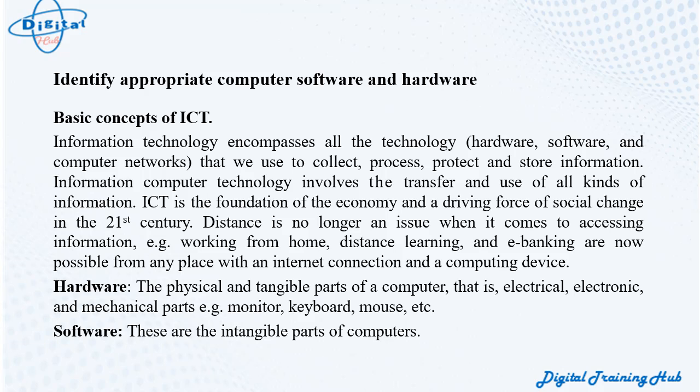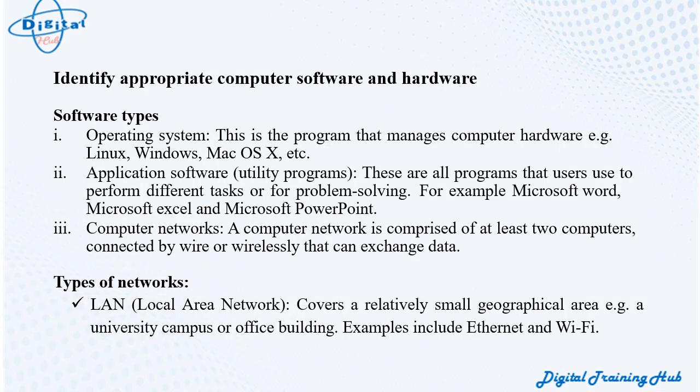Software refers to the intangible parts of computers. Software types include: Operating system — the program that manages computer hardware, e.g., Linux, Windows, Mac OS X; Application software and utility programs — all programs that users use to perform different tasks or for problem solving, for example Microsoft Word, Microsoft Excel, and Microsoft PowerPoint.